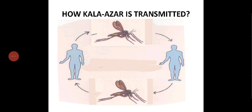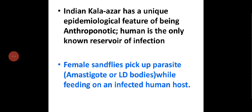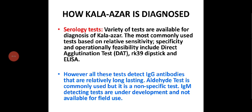Kalazar is transmitted person to person via the sand fly as a vector. Indian Kalazar has a unique epidemiological feature of being anthroponotic — the human is the only known reservoir of infection. The Leishmania parasite is transmitted through the sand fly to another human. Female sand flies pick up the parasite (amastigotes or LD bodies) while feeding on an infected human host.